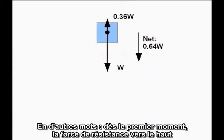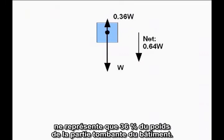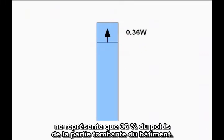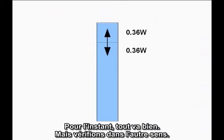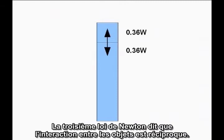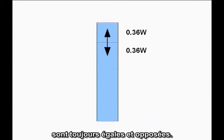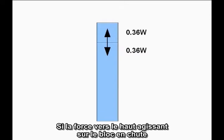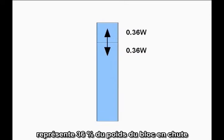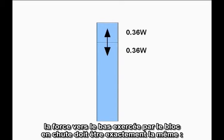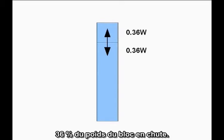In other words, once it starts falling, the upward resistive force is only 36% of the weight of the falling section of the building. But now turn it around. Newton's Third Law says interactions between objects work both ways — the forces two objects exert on each other are always equal and opposite. If the upward force acting on the falling block is 36% of the weight of the falling block, the downward force exerted by the falling block must be exactly the same: 36% of the weight of the falling block.